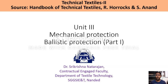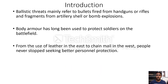In Mechanical Textiles 2, we will be continuing with Unit 3, that is mechanical protection. In today's lecture we are moving on to a new topic in mechanical protection: ballistic protection. From the word, you can understand ballistic means something related to projectiles or flight, where there are some bullets which are fired. Ballistic threats mainly refer to bullets fired from handguns or rifles and fragments from an ordinary shell or bomb explosion.